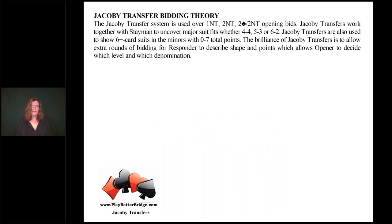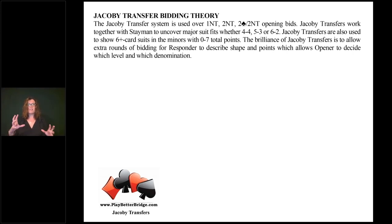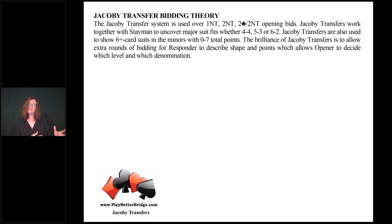Jacobi transfer bidding theory. The system is used when your partner opens one no trump or two no trump, or sometimes they open two clubs and rebid two no trump. We're going to focus on Jacobi transfers following the one no trump opener. Jacobi transfers works together with Stayman — lesson five was Stayman — and now we're doing Jacobi transfer, so we'll have a nice review of Stayman to see how those two conventions work together for responder when opener starts with one no trump.